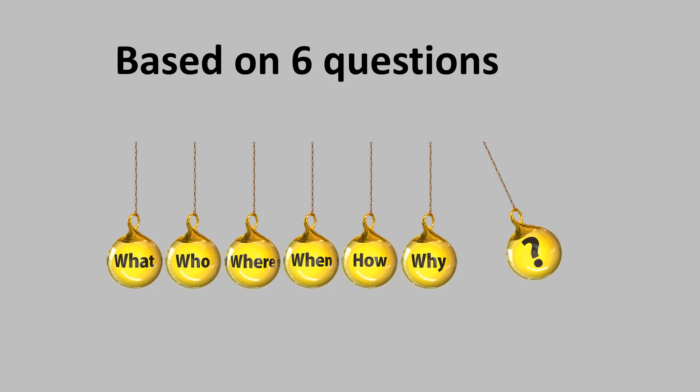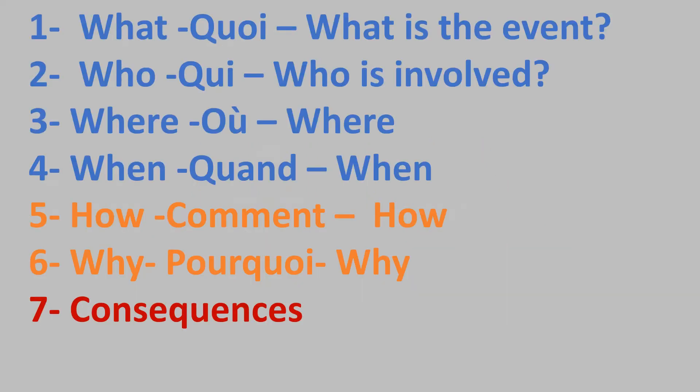When you're going to write your Fait divers, you need to have this information. The what — quoi in French — is what is the event. What are we talking about? What is the Fait divers? The second is the who — qui — who is involved. The third is where — où — where is the event taking place? Four is when — quand — when is it taking place? Very often these first four pieces of information will already be given to you. Then you have number five: how — how did all this happen, and why. And the last one is what I call the consequences — what are the consequences?